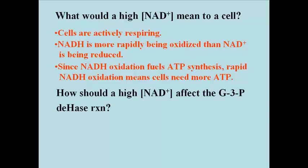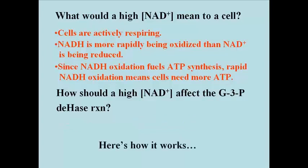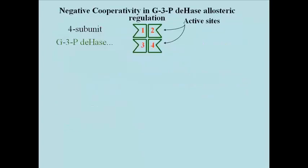How should high NAD+ levels affect the G3P dehydrogenase reaction? Clearly it should make the enzyme catalyze its reaction faster, so that it will not be the rate-limiting reaction in the glycolytic pathway — meaning it won't be the slowest reaction in the pathway. Glyceraldehyde 3-phosphate dehydrogenase is made up of four identical polypeptide subunits, each with an active site able to catalyze the redox reaction. Allosteric regulation is by negative cooperativity.